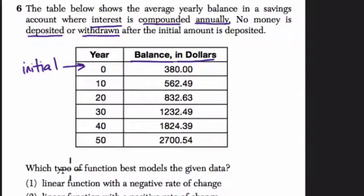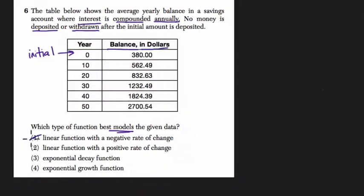So they want us to figure out which type of function best models the given data. That's a hint right there. If you see modeling, this might not be an exact function, but close to it, that models this data. But we can eliminate choices one and three, because choice one says it's a linear function with a negative rate of change.